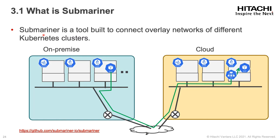Submariner is a tool built to connect overlay networks of different Kubernetes clusters. It can connect Kubernetes clusters in different networks — networks can be in other clouds, even over the internet. You can connect more than two Kubernetes clusters. You can communicate from a pod in one Kubernetes cluster to a pod in another Kubernetes cluster almost as if it is in the same cluster, like accessing a peer service that is not a load balancer service.